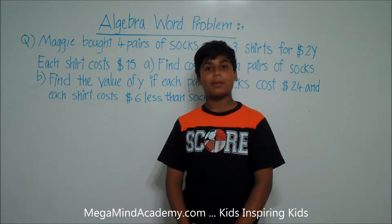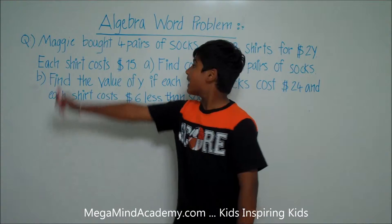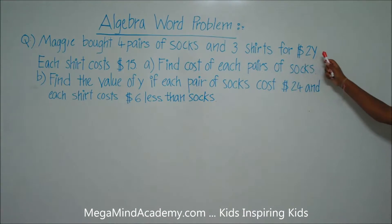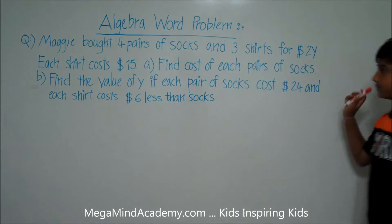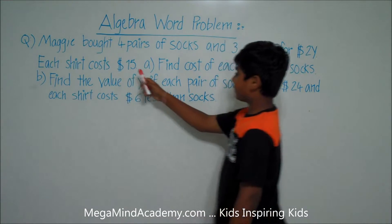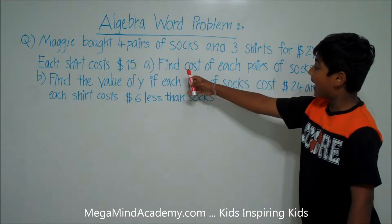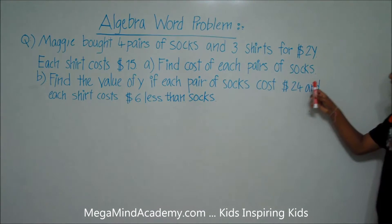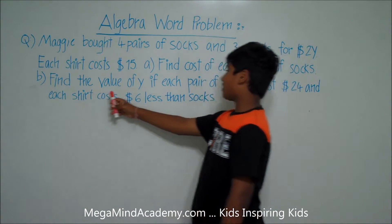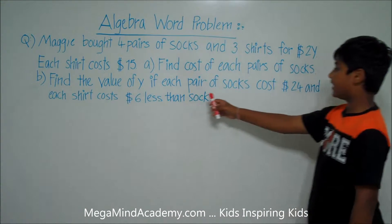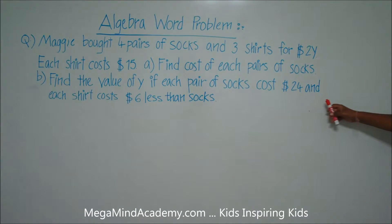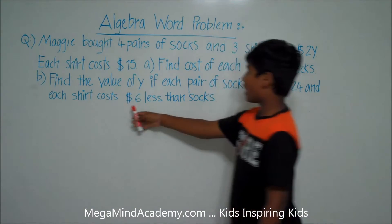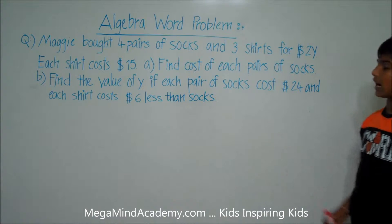Let's say we have a problem like: Maggie bought four pairs of socks and three shirts for 2Y dollars. Each shirt costs fifteen dollars. A: Find the cost of each pair of socks. B: Find the value of Y if each pair of socks costs twenty-four dollars and each shirt costs six dollars less than socks.